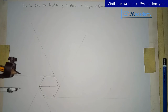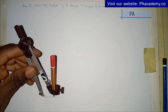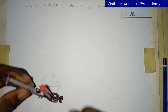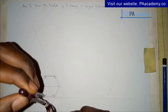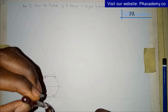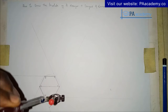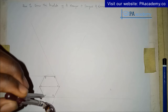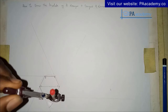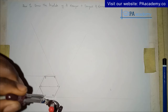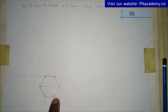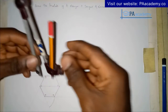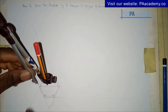Now we have started drawing the involute itself. Starting from point A, draw the first arc — you can see it goes from here to here. Now we move to point F.